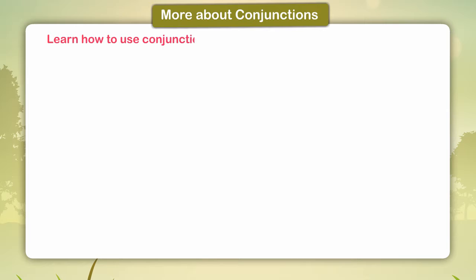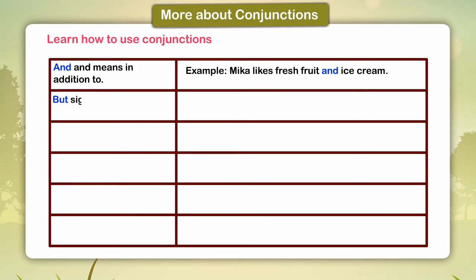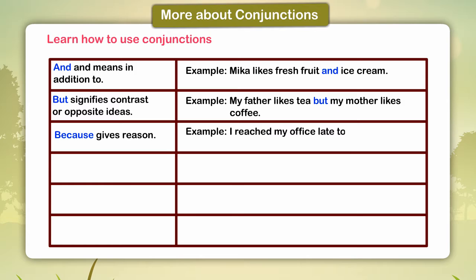Learn how to use conjunctions. 'And' means 'in addition to.' Example: Mika likes fresh fruit and ice cream. 'But' signifies contrast or opposite ideas. Example: My father likes tea but my mother likes coffee. 'Because' gives a reason. Example: I reached my office late today because it was raining.